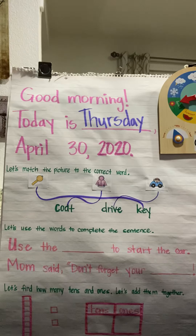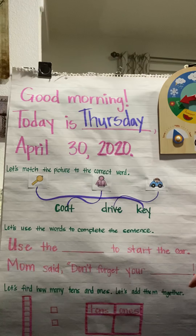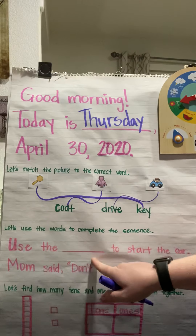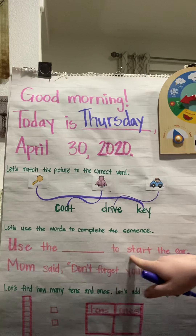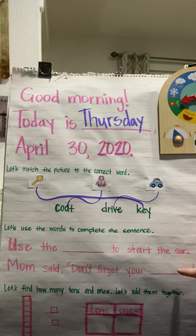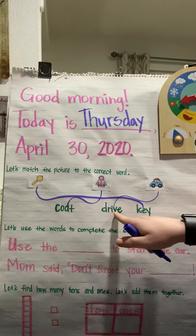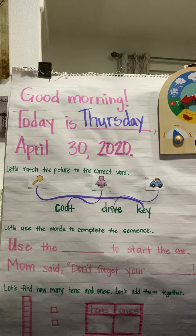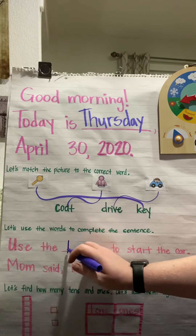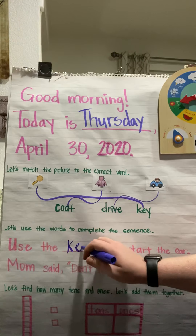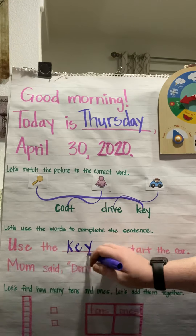Our next skill is to use some of the words to complete the sentence. The sentence says: use the blank to start the car. What would we use to start the car — a coat, drive, or key? Key, right? So I would fill in key: K-E-Y.